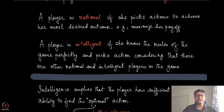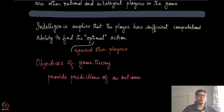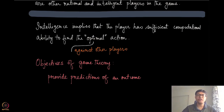That is intelligence. To make things short and concrete, intelligence essentially implies that the player has sufficient computational ability to find the optimal action — which is optimal against other players who are also of the same type — not just a unilateral optimization.